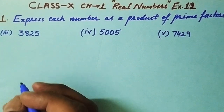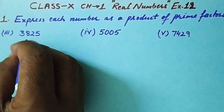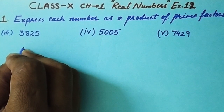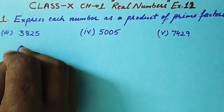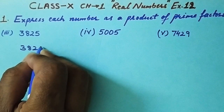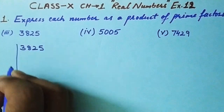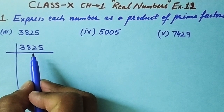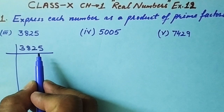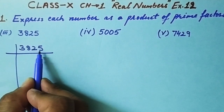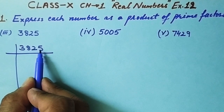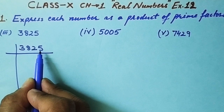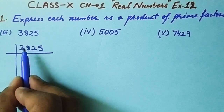Let's start with the first part: 3825. We need to write its prime factorization. First, we check with the prime number 2. This number is not divisible by 2 because its units place is 5. Numbers are divisible by 2 only if their units place is 0, 2, 4, 6, or 8. So 3825 is not divisible by 2. Next prime number is 3.